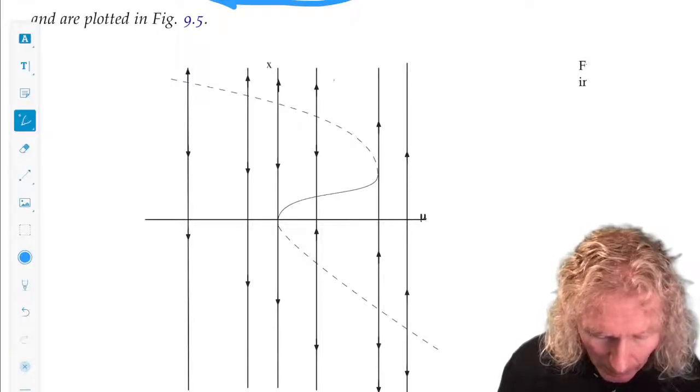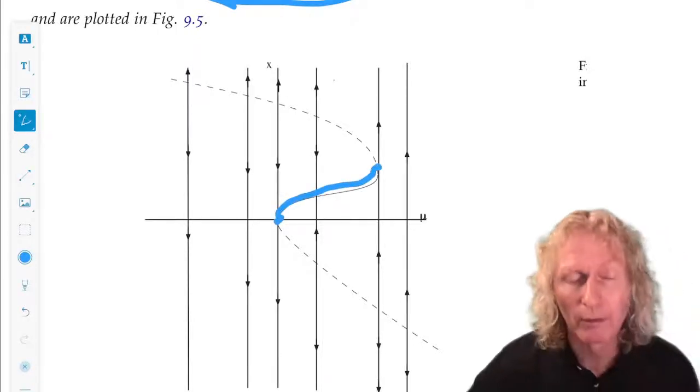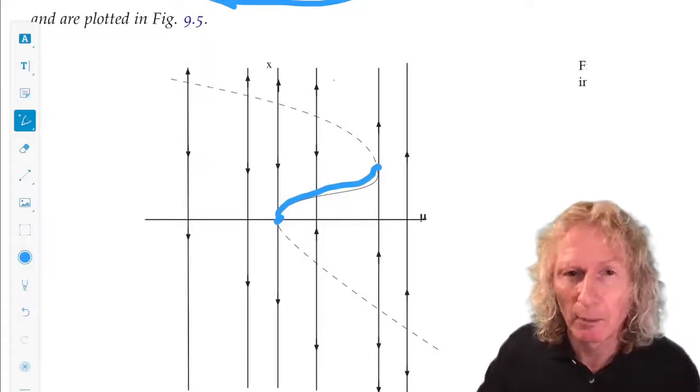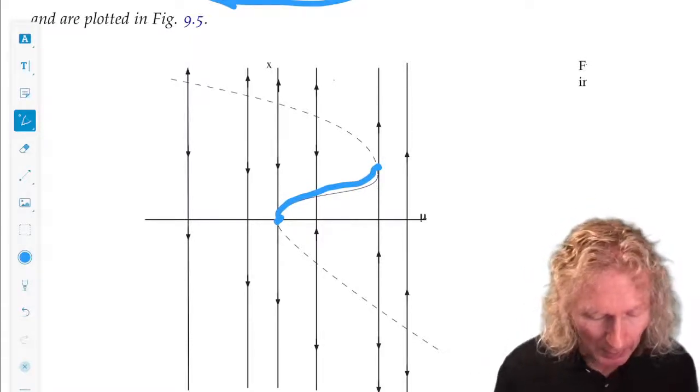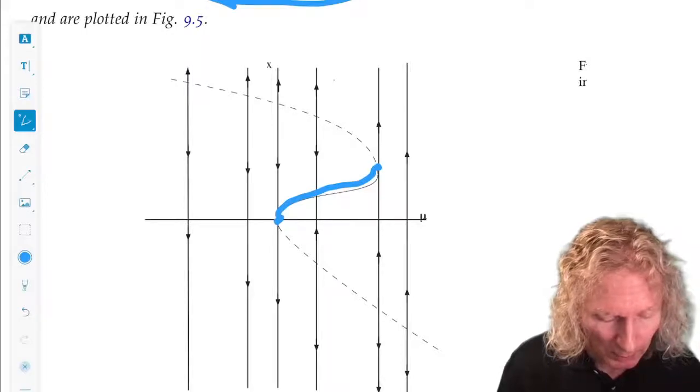The only part of this curve which is stable is the part I've highlighted here. The dashed lines are all unstable.